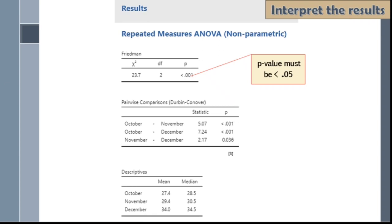Take note that post hoc analysis should only be conducted when the result of the Friedman's test is significant. Otherwise, it is meaningless. It is represented by the table under pairwise comparisons.